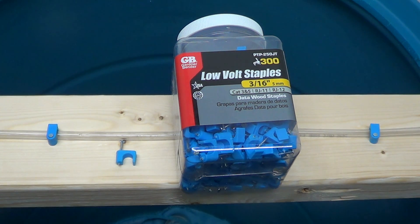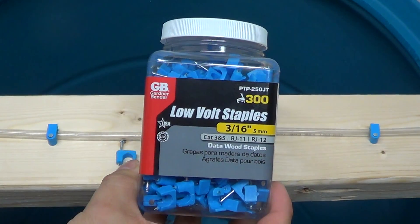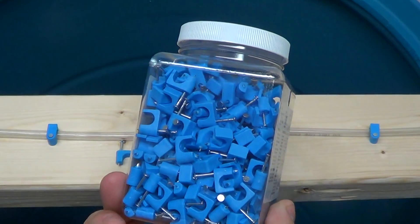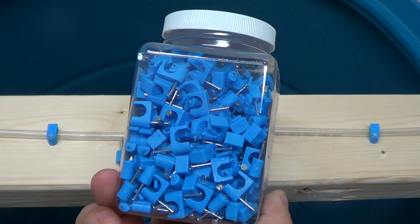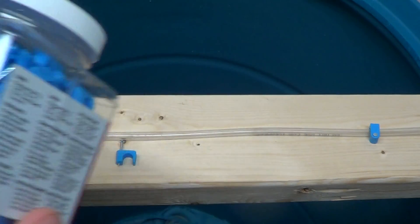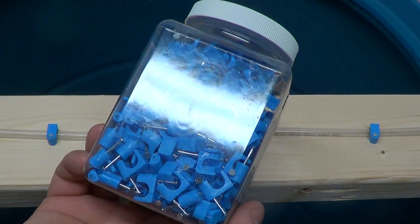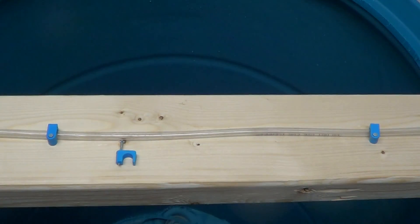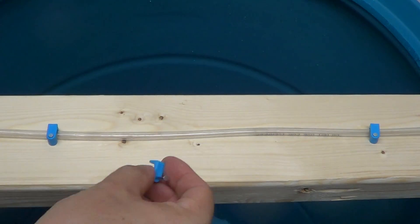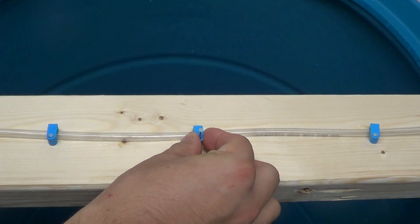So one good way that I've found to manage all of your airlines is to use low-volt staples. You can find these things in any hardware store. It's in the electrical aisle, and you can get them in big boxes like this. You can also get them in smaller bags. And for pennies a piece, they do a really good job at managing your airline hose.